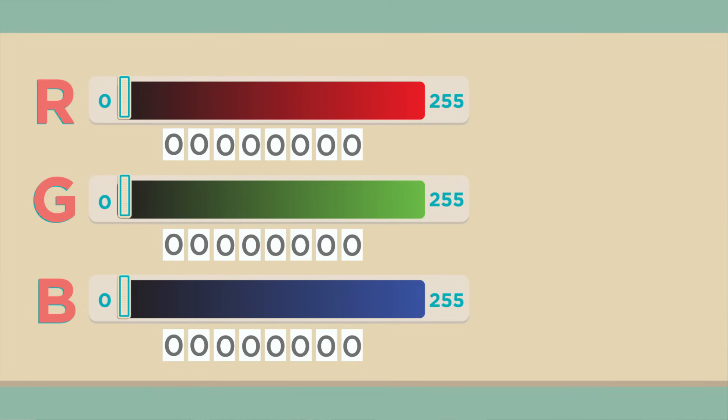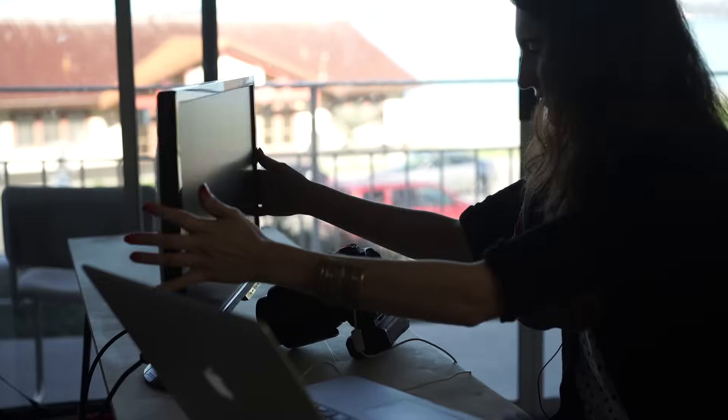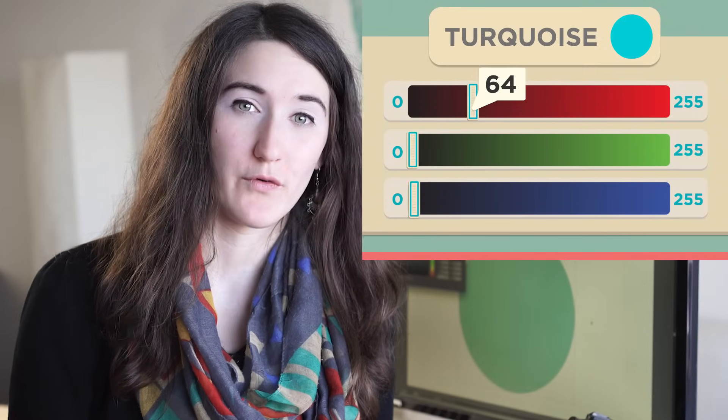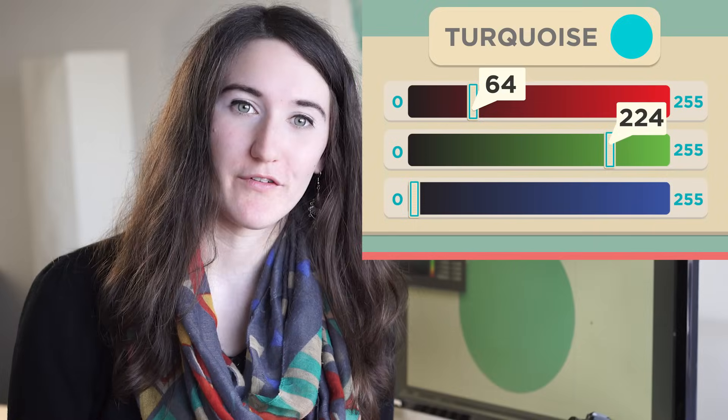0 to 255 gives us 256 different intensities per color channel. We could represent a pixel of the color turquoise, for example, in our traditional decimal base number system as 64 for a little red, 224 for a lot of green, and 208 for some blue.